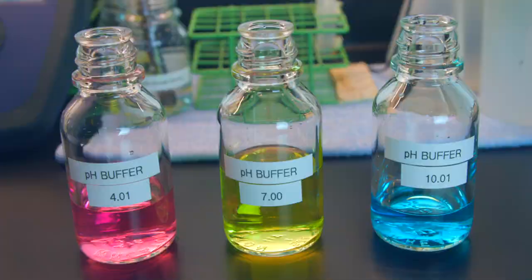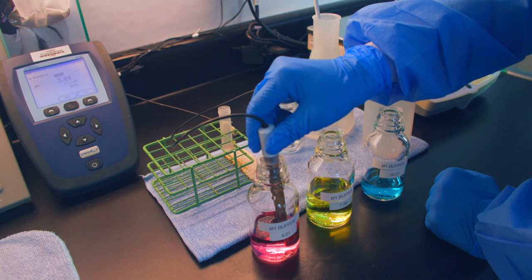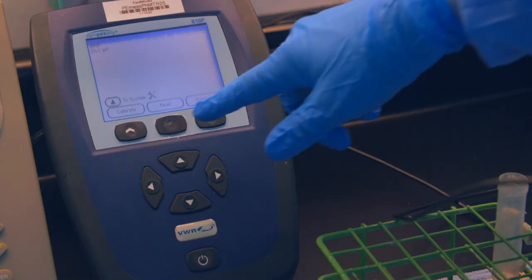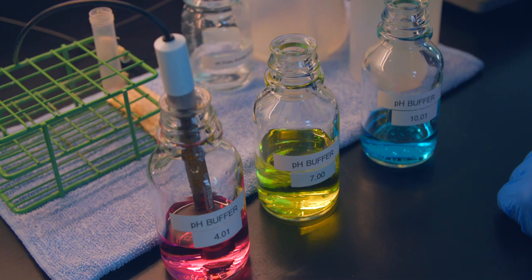To start the verification, place the probe into the pH 4.01 buffer and gently stir to remove any bubbles from the tip of the probe. Press the read button, wait for the screen to say stable, and rinse with deionized water over a waste beaker.